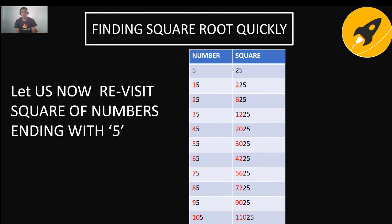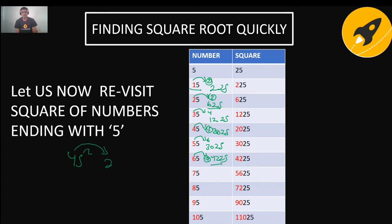The square of a number ending with 5 follows a simple pattern: 5² = 25; 15² = 1 × 2 appended with 25 = 225; 25² = 2 × 3 = 6, appended with 25 = 625; 35² = 3 × 4 = 12, appended with 25 = 1225; 45² = 4 × 5 = 20, appended with 25 = 2025; 85² = 8 × 9 = 72, appended with 25 = 7225. You multiply the tens digit by the next consecutive number, then append 25.